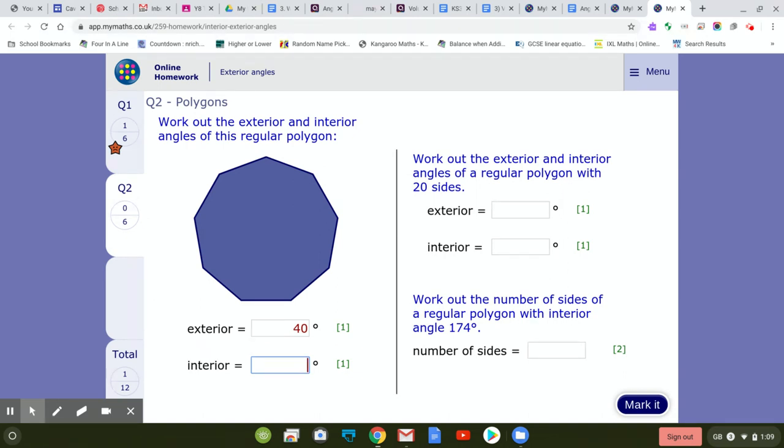The total interior angles is 1260. You only want one of them, so you divide that by 9, and that should be 140. Now obviously there is a link between the exterior and interior—they should add up to 180 as well.